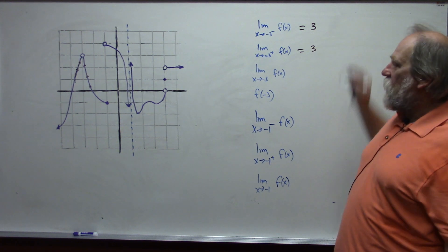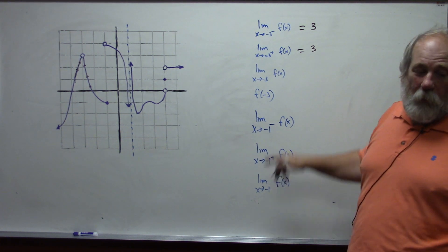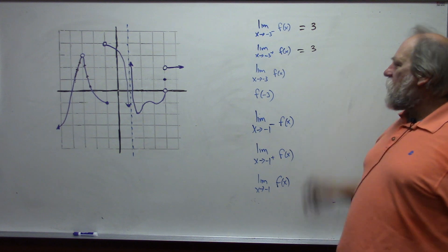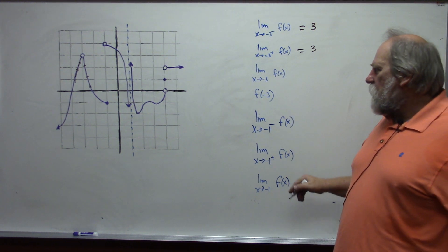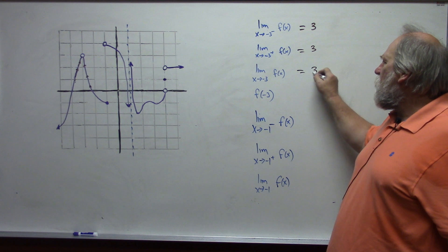Since these match, these are called one-sided limits. The two one-sided limits are the same. The limit as x approaches negative 3 is 3.